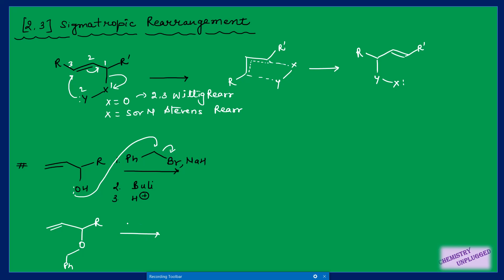Next, n-butyllithium removes the acidic proton adjacent to oxygen, generating a carbanion. We number the system: the allylic system is one, two, three, and the carbon attached to the allylic carbon is numbered one and two. The carbanion attacks, the bond shifts, and the final arrow ends on oxygen to give the product, which is then protonated to form an OH group.